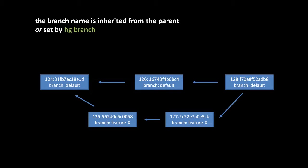We'll look at branch names first because they're considerably easier to understand than tags. The branch name is either inherited from the parent changeset, or it is explicitly set by the hg branch command — before you make your commit, you set the branch name in the working directory, and when you commit, it will have that branch name. The null changeset has the branch name 'default', so when you make the first commit in the repo, assuming you haven't explicitly set the branch name, the first commit will inherit the branch name 'default'. If you don't ever change the branch name, all subsequent changesets will inherit 'default'.